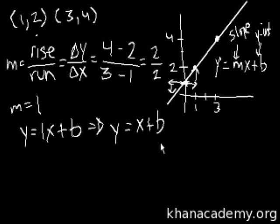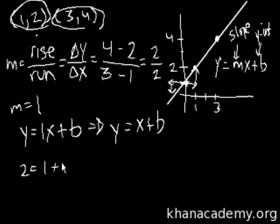Now we need to solve for b. What we do is substitute one of the two points. The point must satisfy the equation. Let's use the point (1,2). Our y is 2, our x is 1, so in the equation: 2 is equal to 1 plus b.